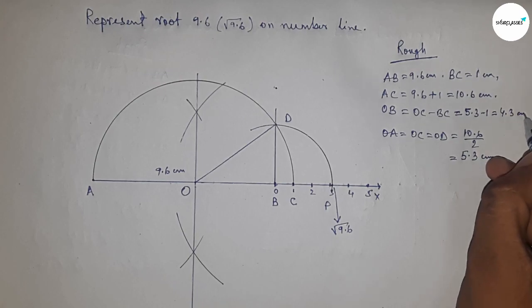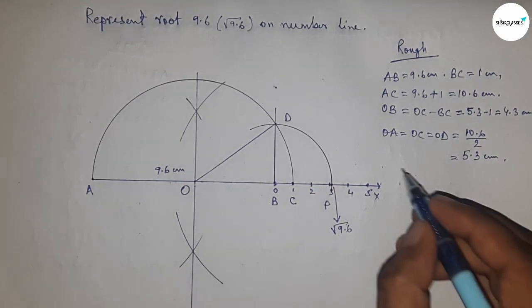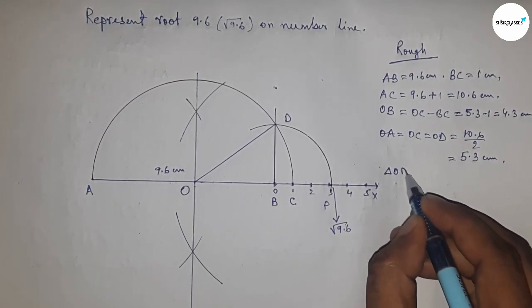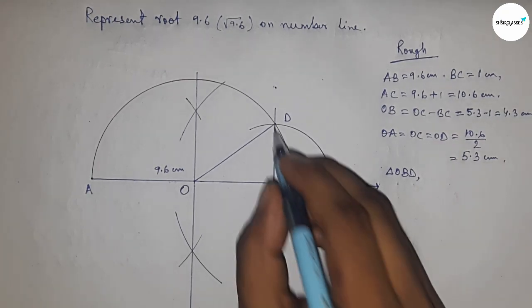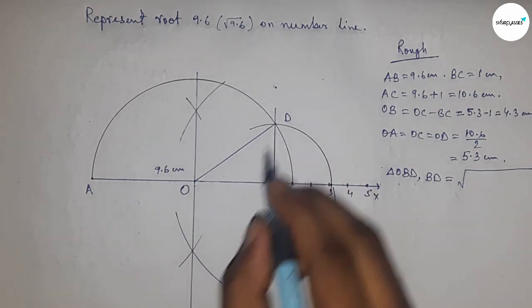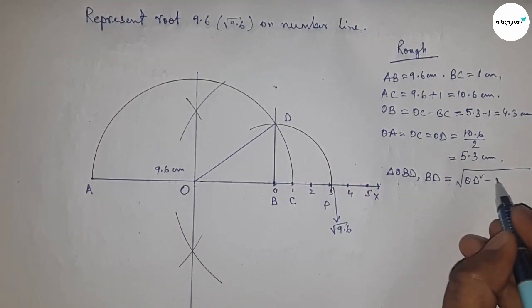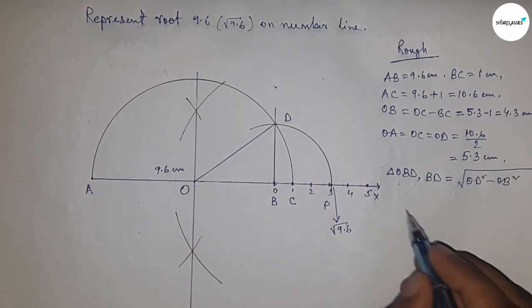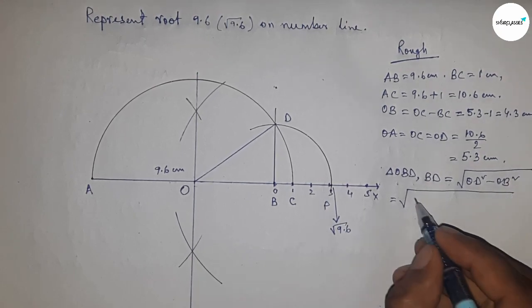From right angle triangle OBD, we can write BD equals, by Pythagorean theorem, the square root of OD squared minus OB squared—hypotenuse squared minus base squared. Now put the values of OD and OB.